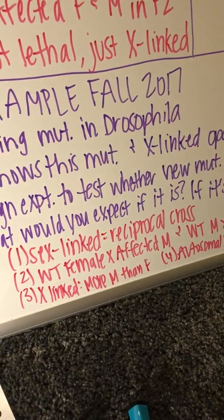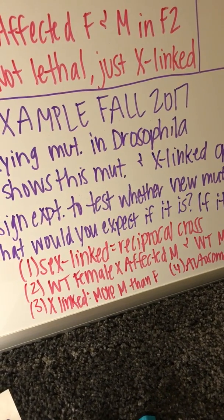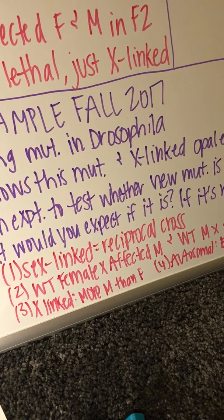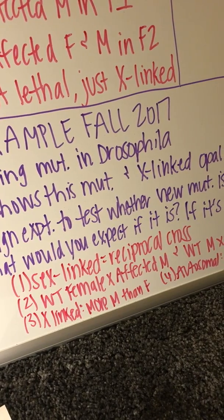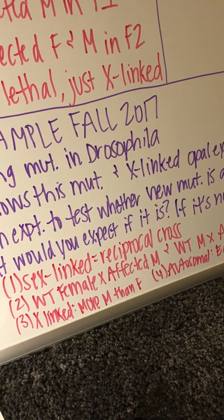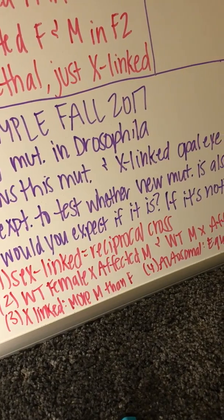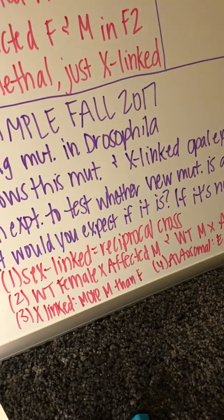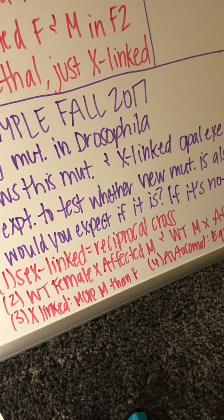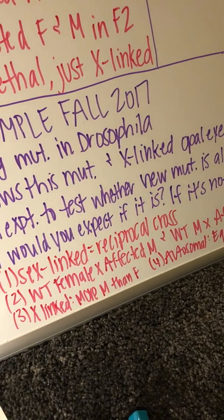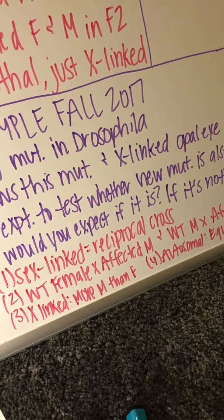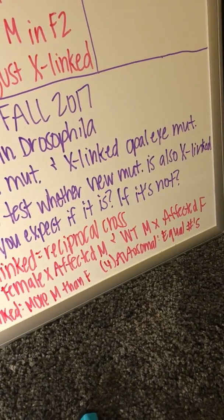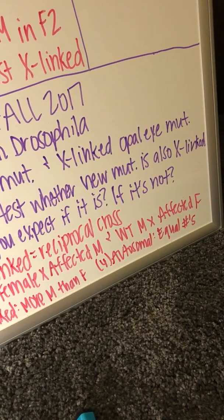To answer this question: whenever we need to determine sex linkage, we use a reciprocal cross — crossing a wild-type female and affected male with a wild-type male and affected female. If the trait is X-linked, we expect more males than females affected, the trait skips generations, and an affected mother passes it to 100% of her sons. If it is autosomal, we expect an equal number of males and females affected, displaying normal dominance patterns.